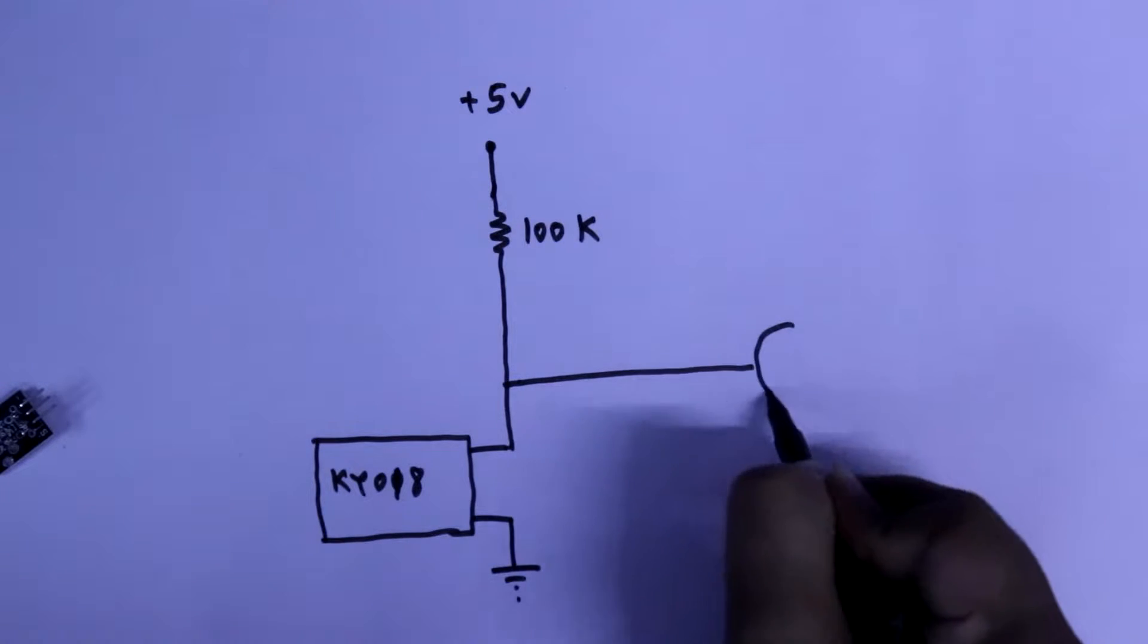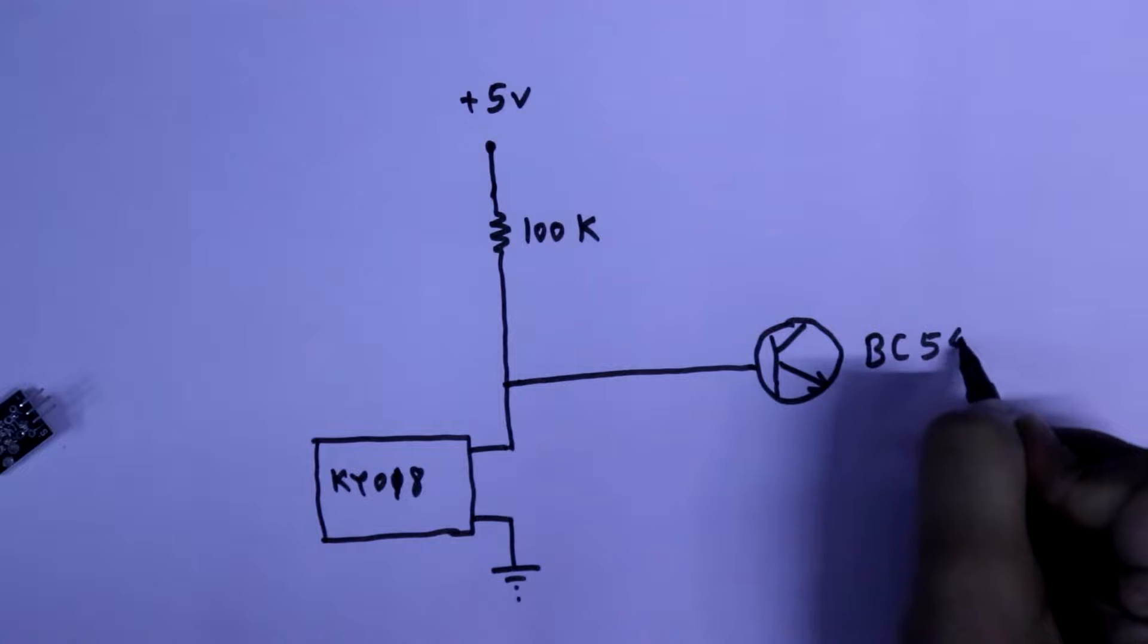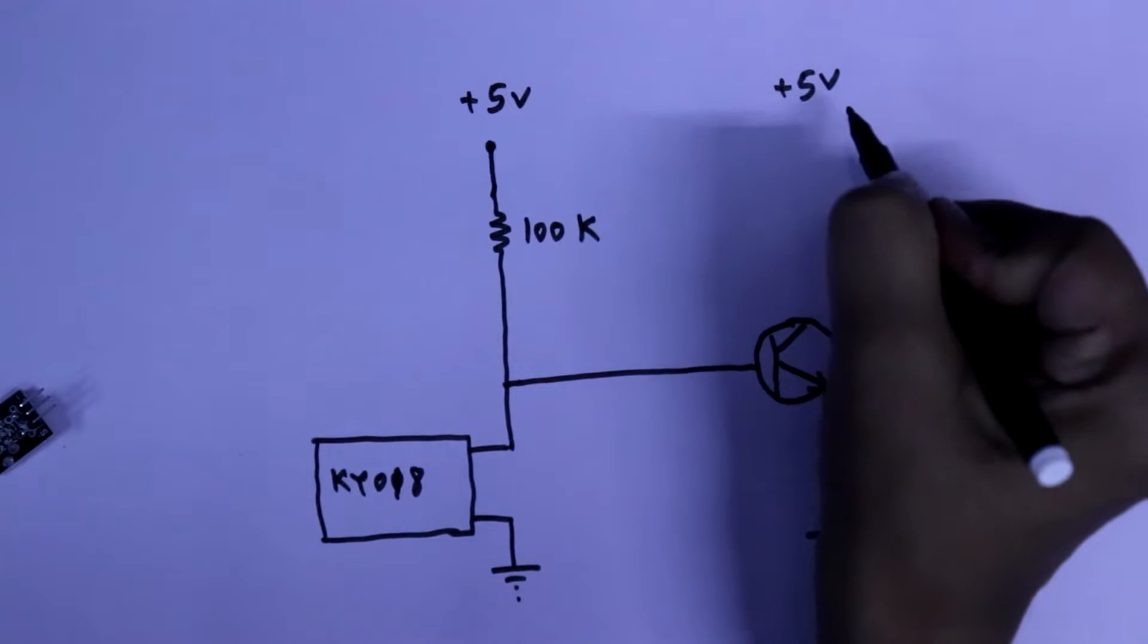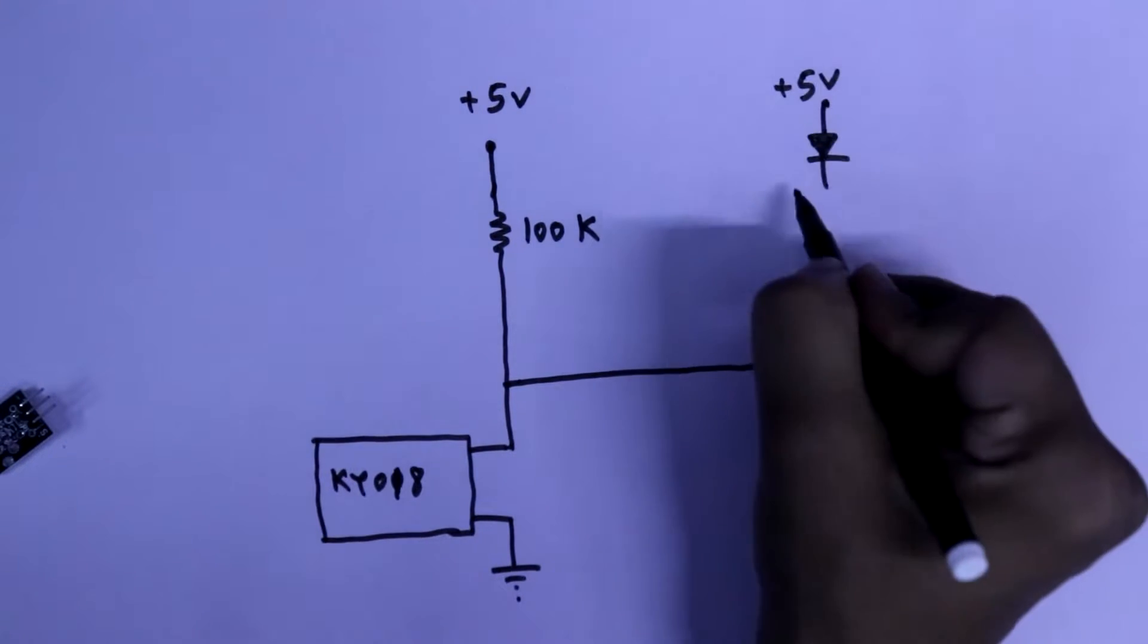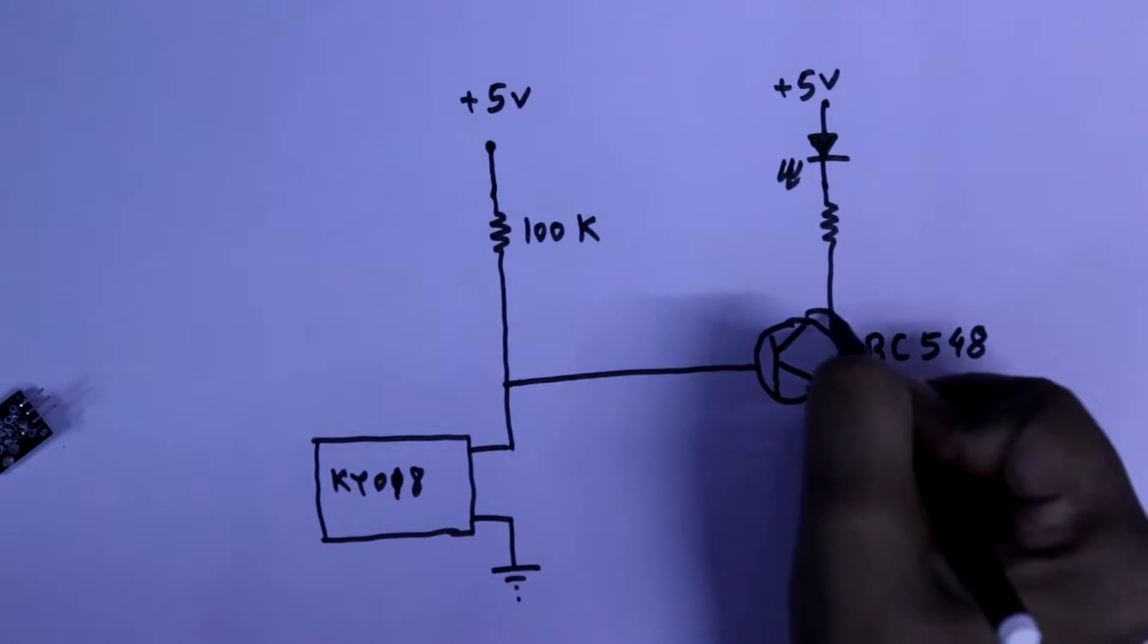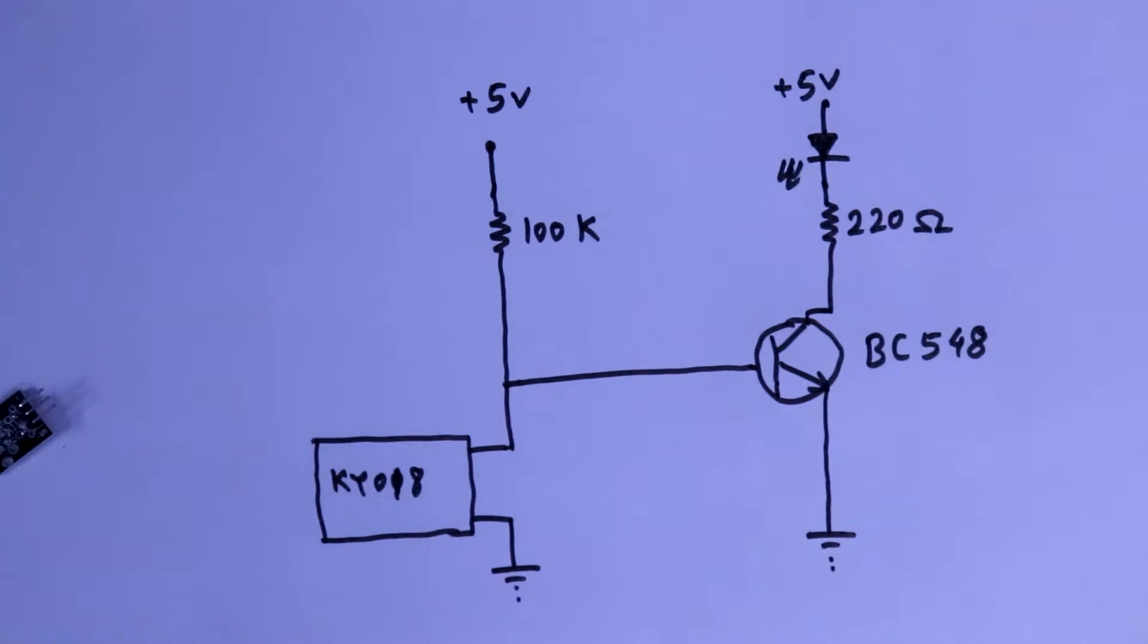To control the LED we have to use a transistor. This is BC548. The emitter pin will be connected to the ground. And it will connect the LED to plus 5 volt. And with the LED we have to connect a series resistor. It is 220 ohms. This is the circuit. Now we will see this circuit on breadboard.